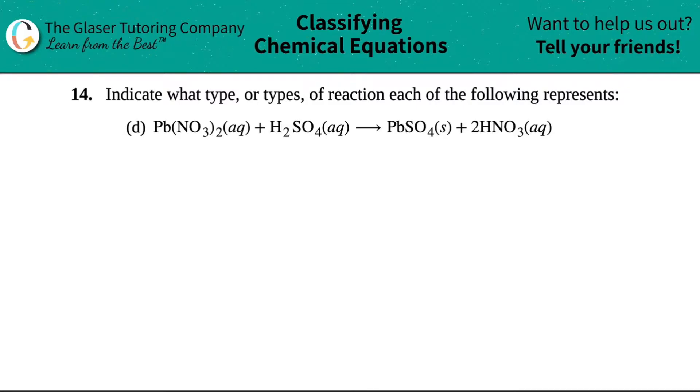Number 14, indicate what type or types of reaction each of the following represents, and then we have letter D. So in this case, we have Pb(NO3)2 plus H2SO4 yields PbSO4 and then plus HNO3.